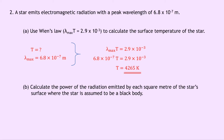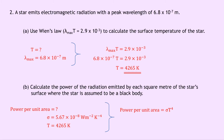Part B says to calculate the power of the radiation emitted by each square meter of the star's surface, where the star is assumed to be a black body. Just like in Question 1 we're finding power per unit area. We know sigma is 5.67 times 10 to the minus 8, and our surface temperature from Part A is 4265 Kelvin. Writing down our equation: power per unit area equals sigma T to the 4. Substituting in gives 5.67 times 10 to the minus 8 times 4265 to the power of 4, giving an answer of 1.9 times 10 to the 7 watts per meter squared.